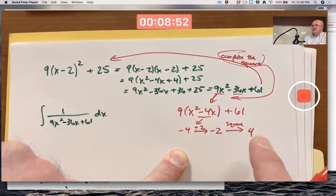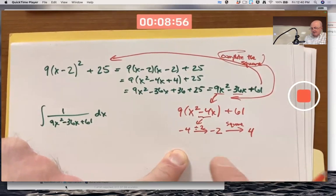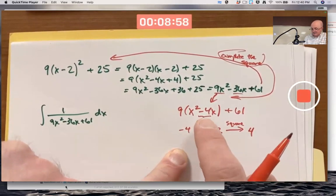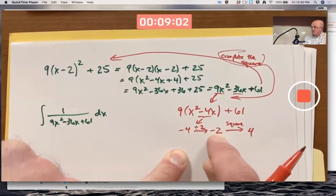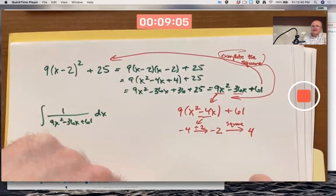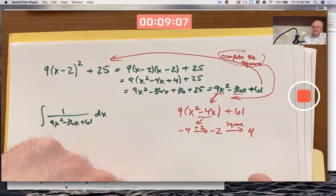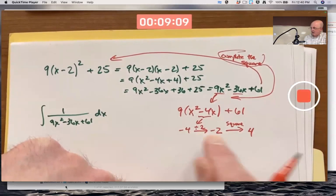They would not have been opposites of each other. We'd still have opposite signs in this case. But that's the process. Divide it by 2 and square it.